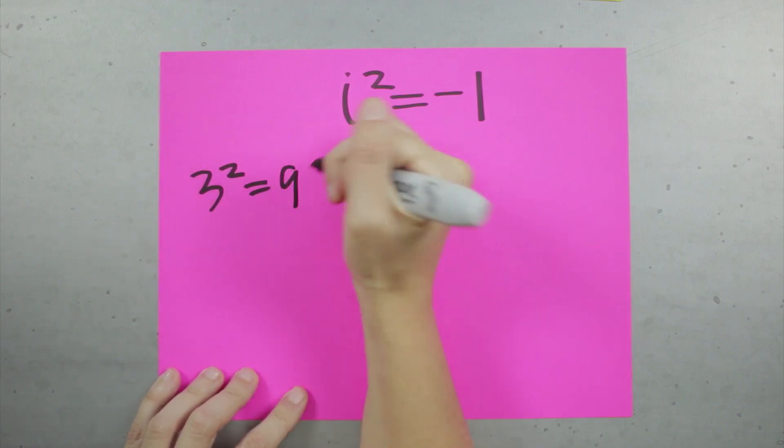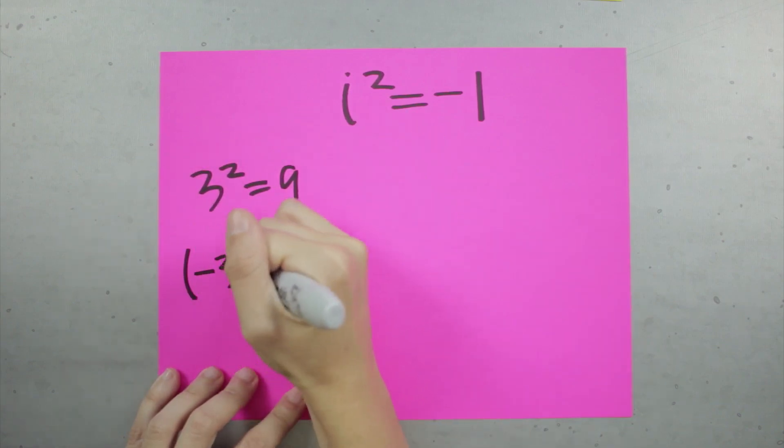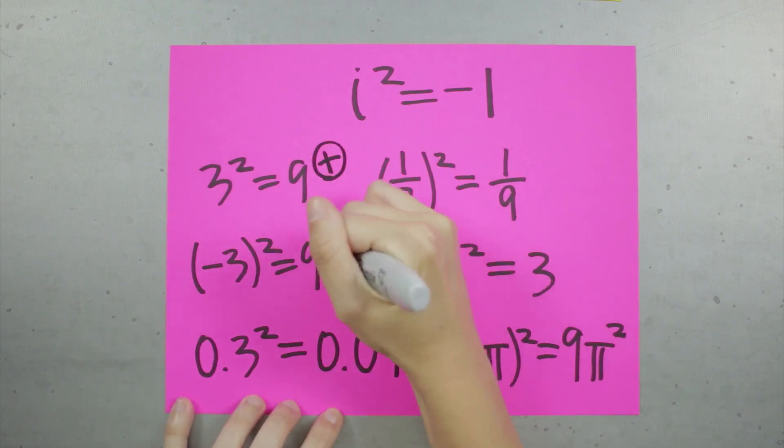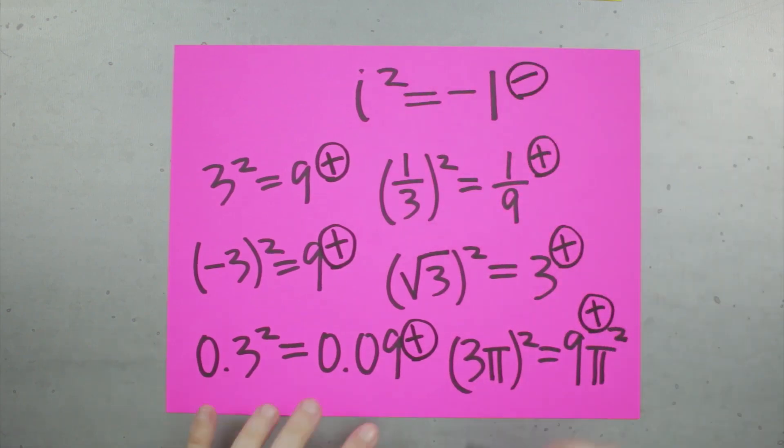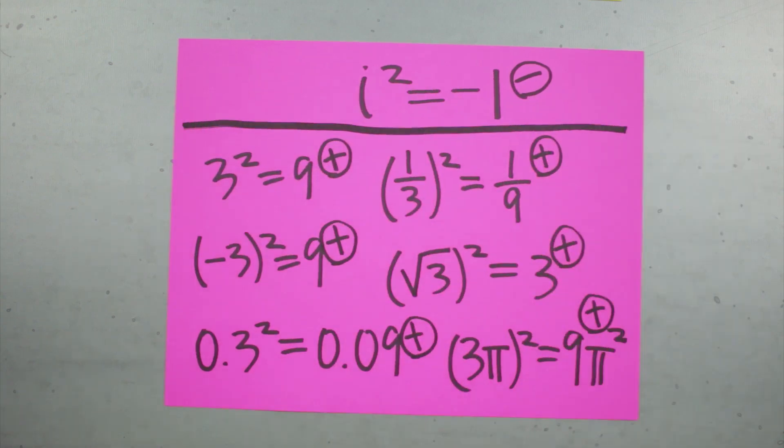We have no way, using real numbers, to multiply a number by itself and come up with a negative result. Squaring a real number always gives a positive number, whereas squaring the imaginary number actually does give a negative number.